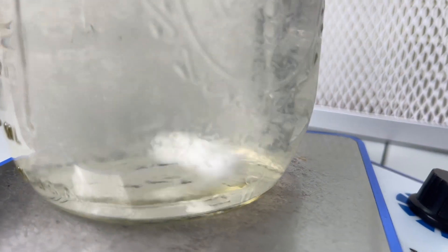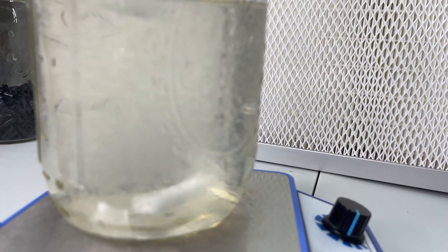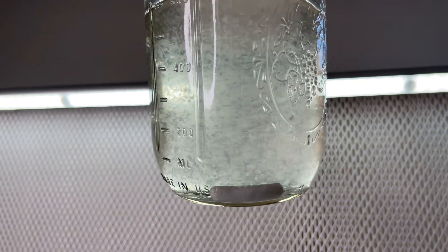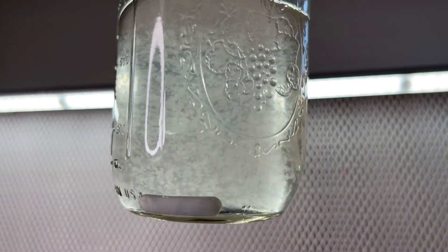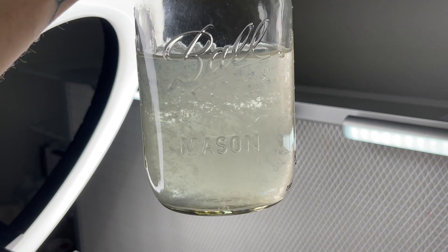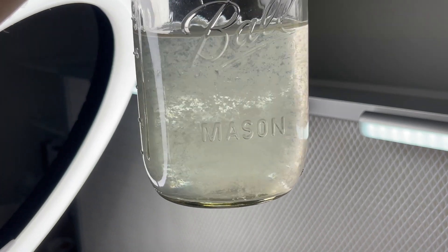After letting the jar sit in a room around 78 degrees Fahrenheit for one week the mycelium is already starting to propagate. After another week the mycelium has noticeably grown thicker.